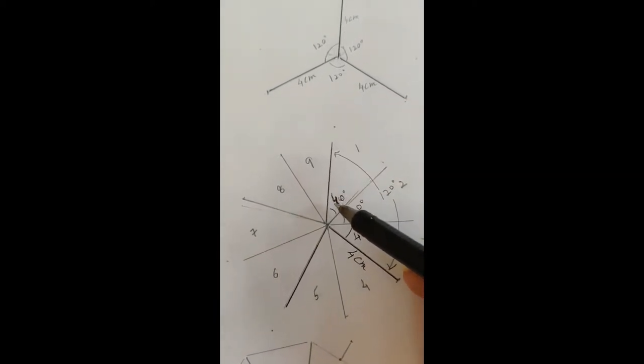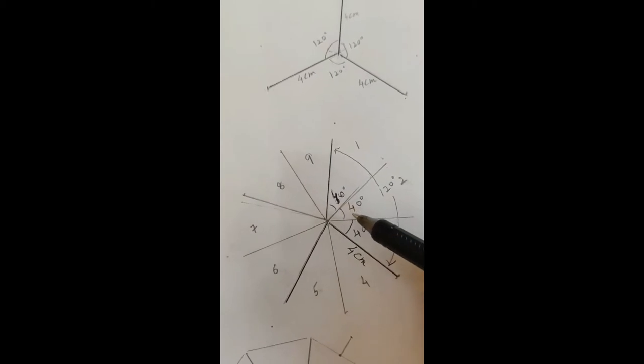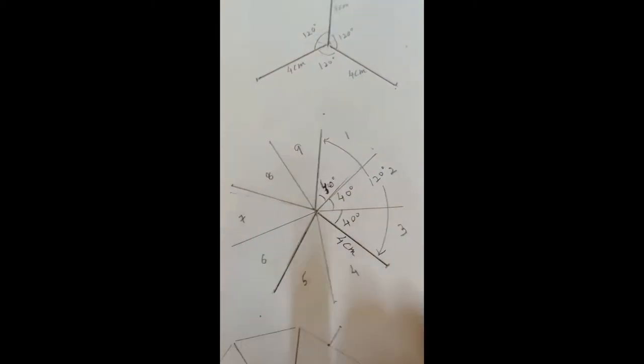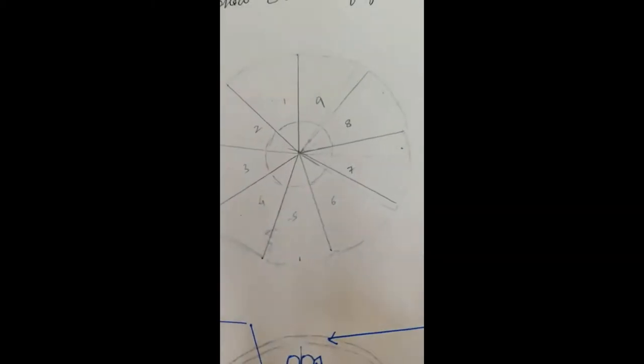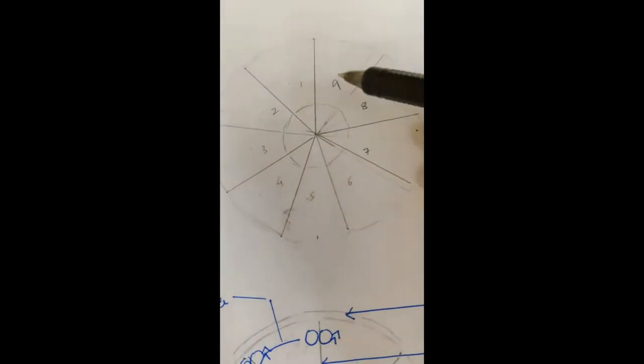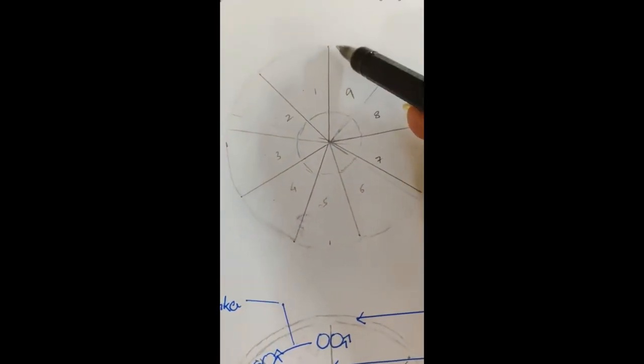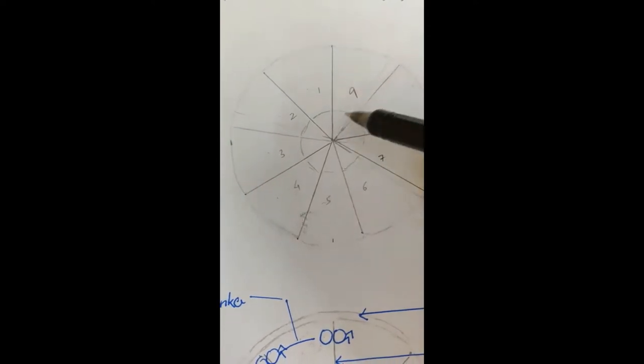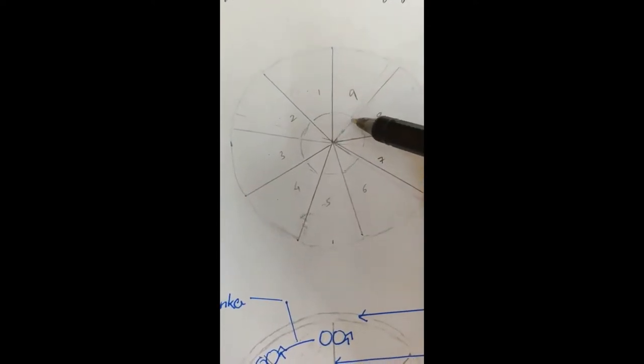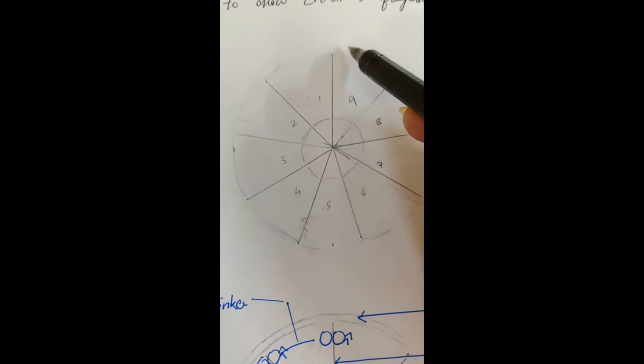Or alternatively you can actually draw a circle. The circle should be such that the radius should be 4 centimeter and the intervening angle should be 40 degree. So you already have a circle here.